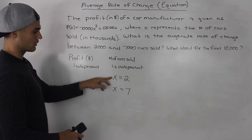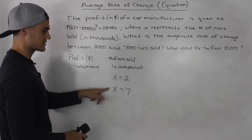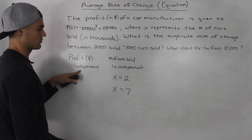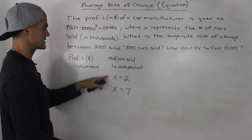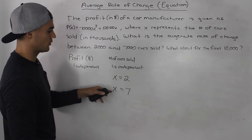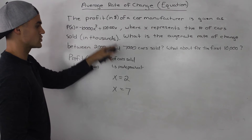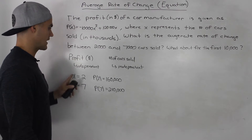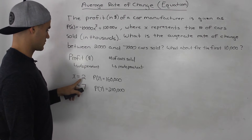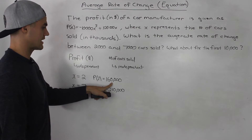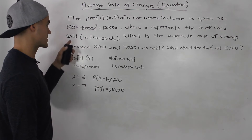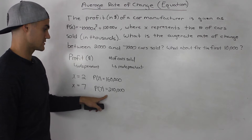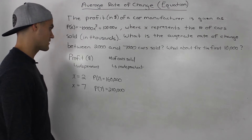We have our values for the independent variable — x = 2 and x = 7 — but we need the values of the dependent variable at those points. So we plug 2 and 7 into the equation. Plugging in 2 gives a profit of $160,000, so selling 2,000 cars yields $160,000 in profit. Plugging in 7 gives $210,000, so at 7,000 cars you're making $210,000 in profit.